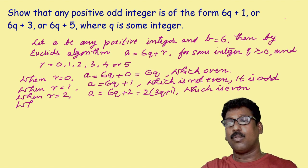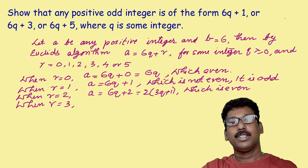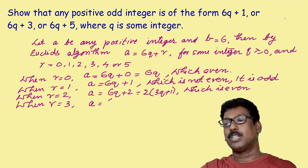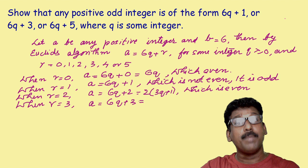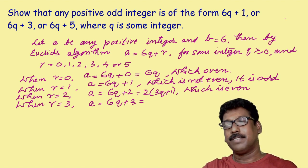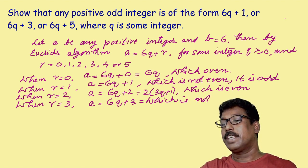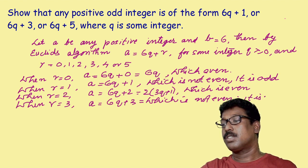Now, can you say what the value is when r is equal to 3? You can write a is equal to 6q plus 3. It is not divisible by 2, it is not a multiple of 2. So we can write: which is not even. Therefore, it is odd.